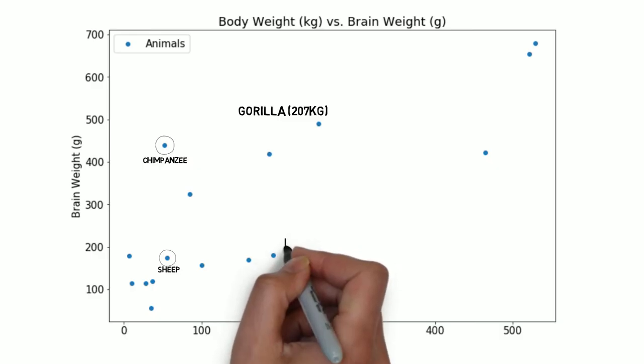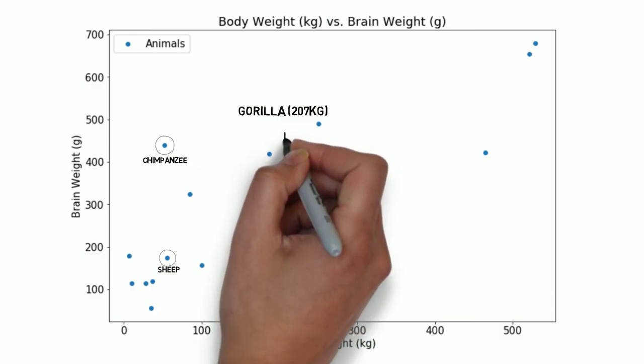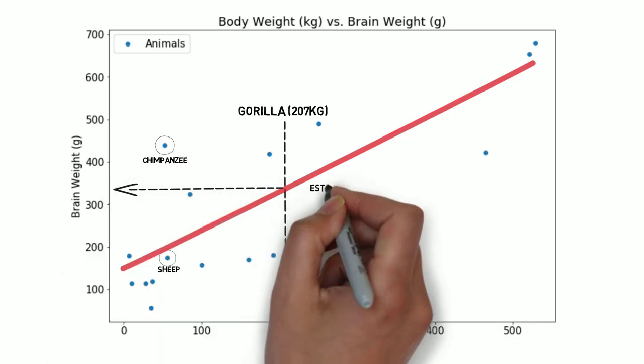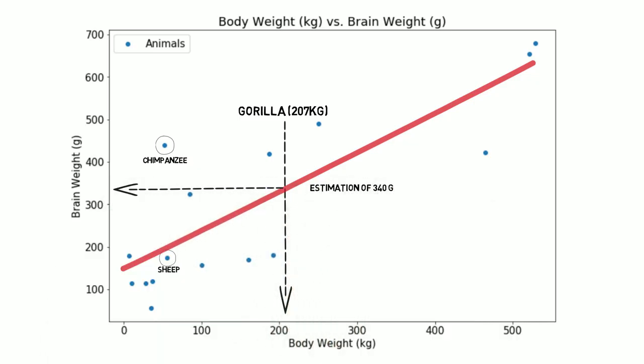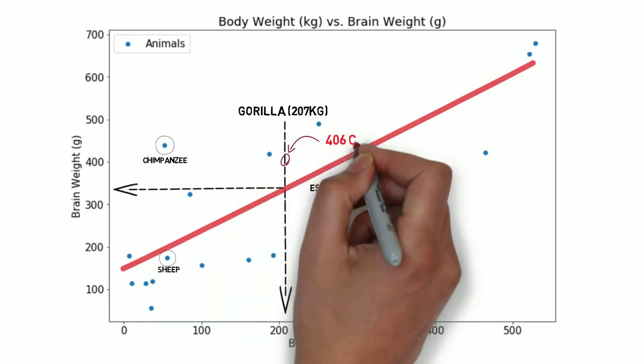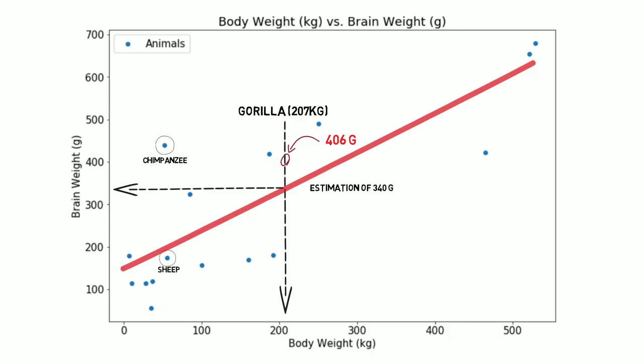What would your guess be? Without a regression line, this would be a shot in the dark. Let's draw a regression line using the least squares technique that we used previously. Now, let's estimate. We can estimate the brain weight to be around 340 grams based on the regression line. The actual brain weight is 406 grams which is still relatively close to our regression line.